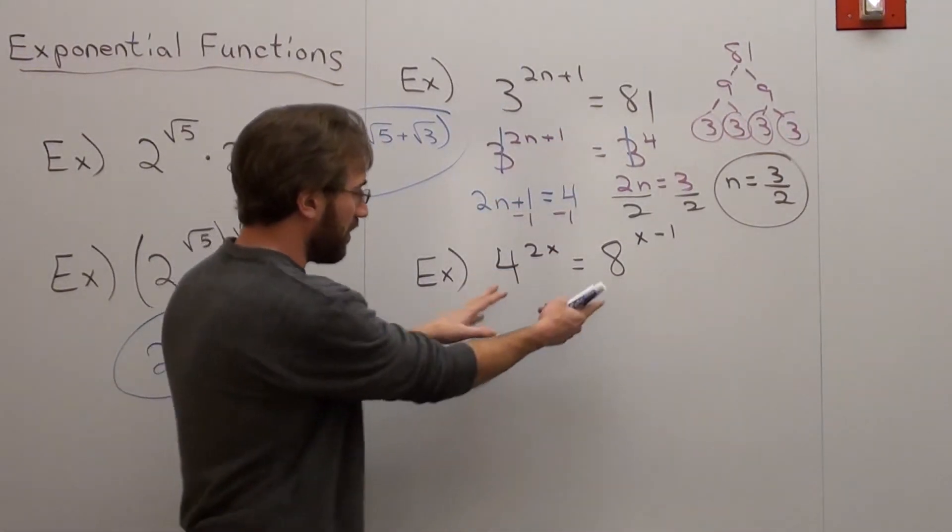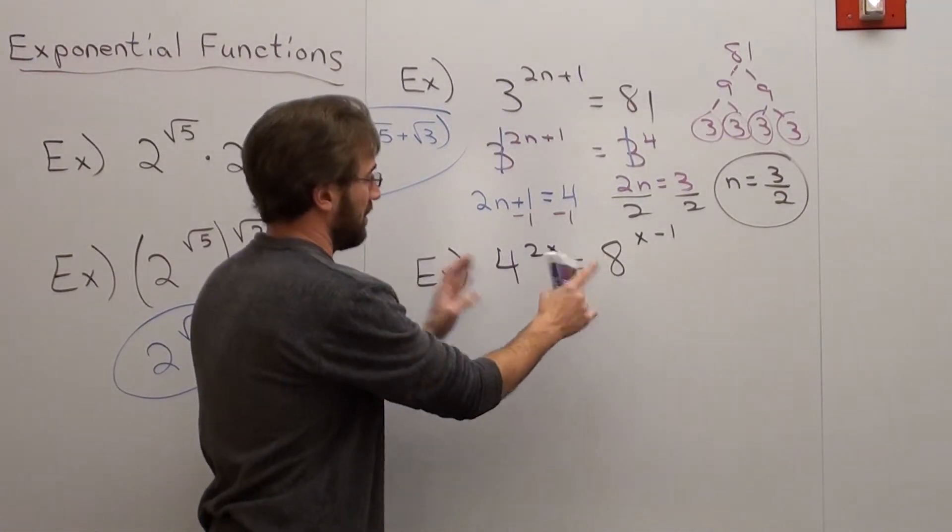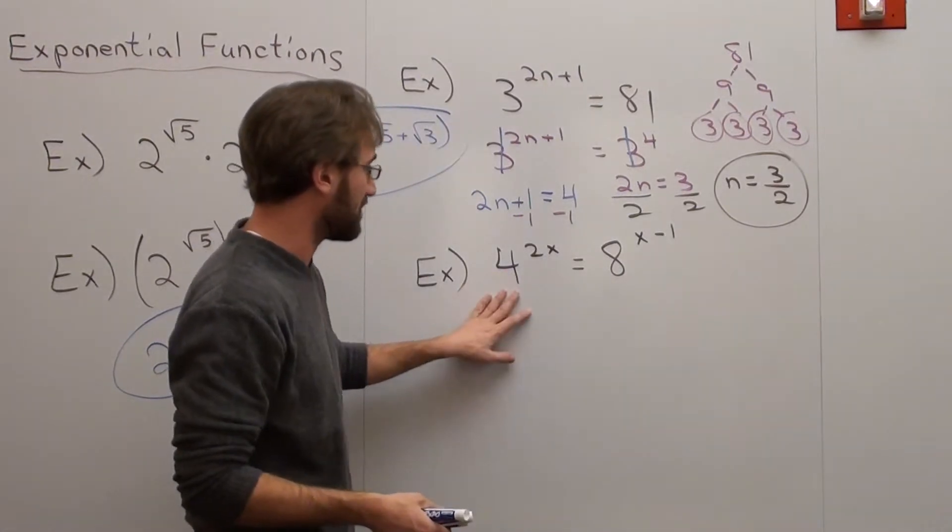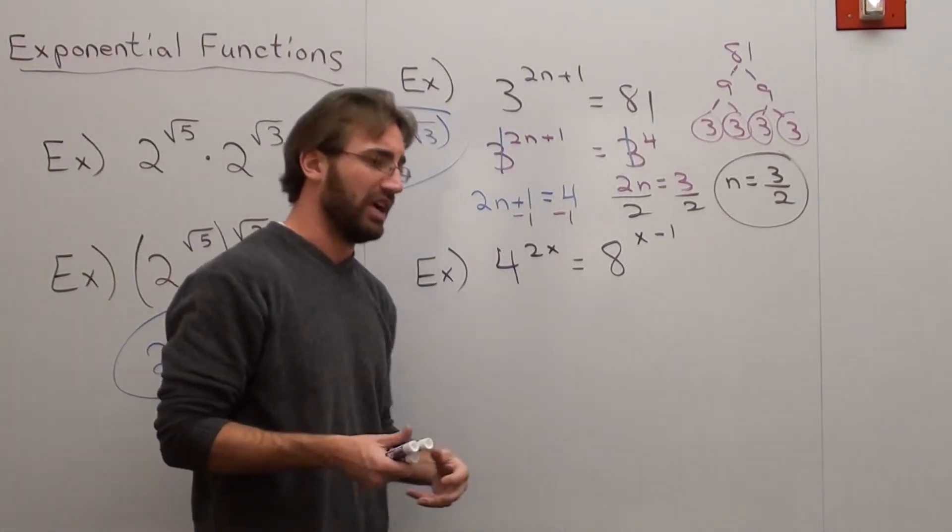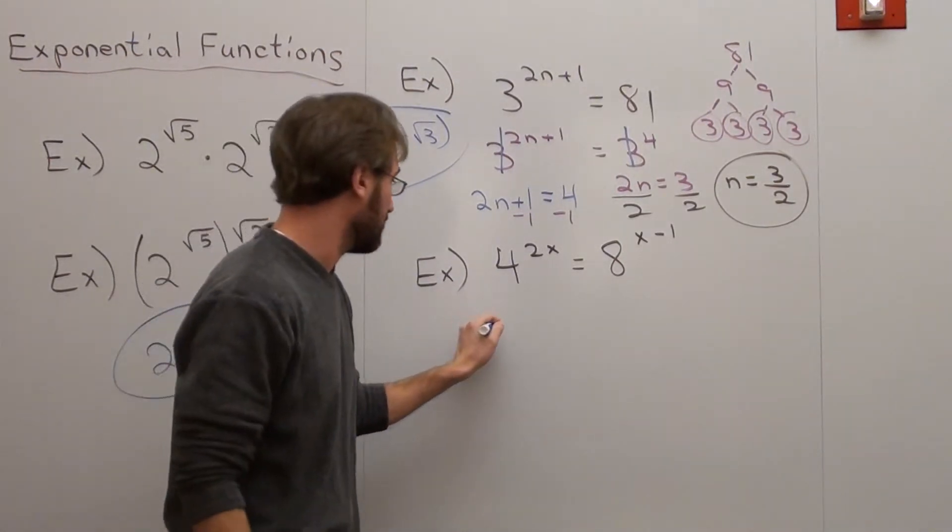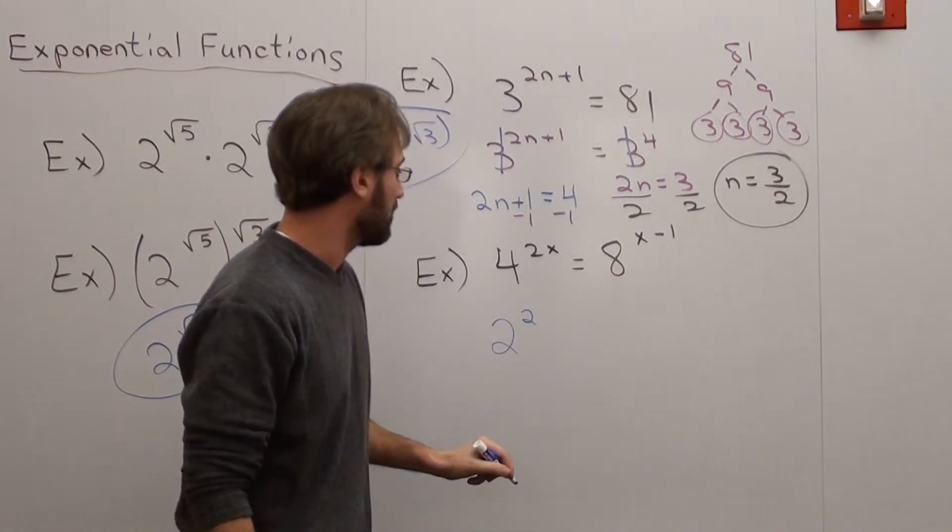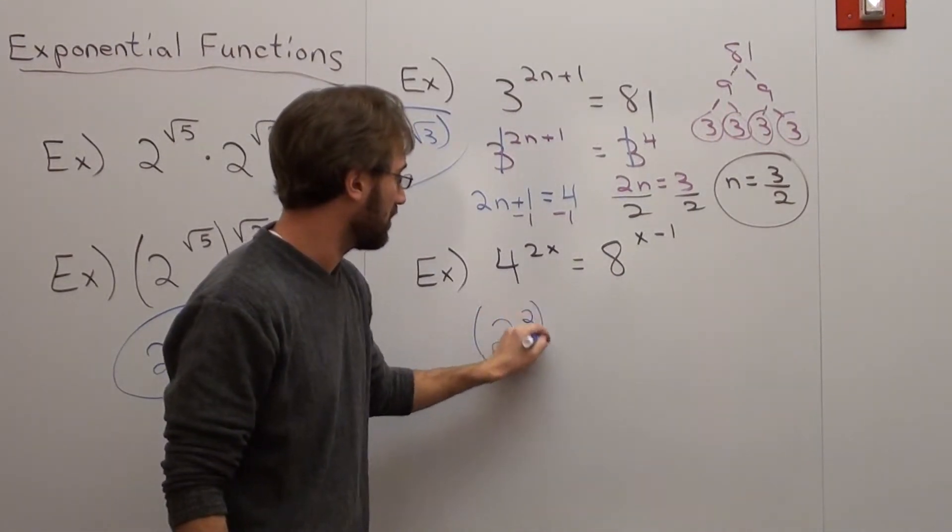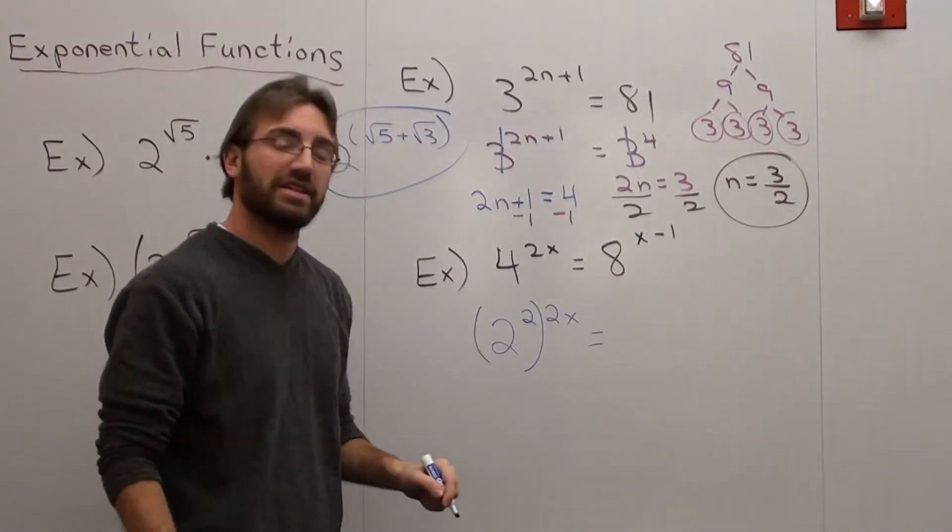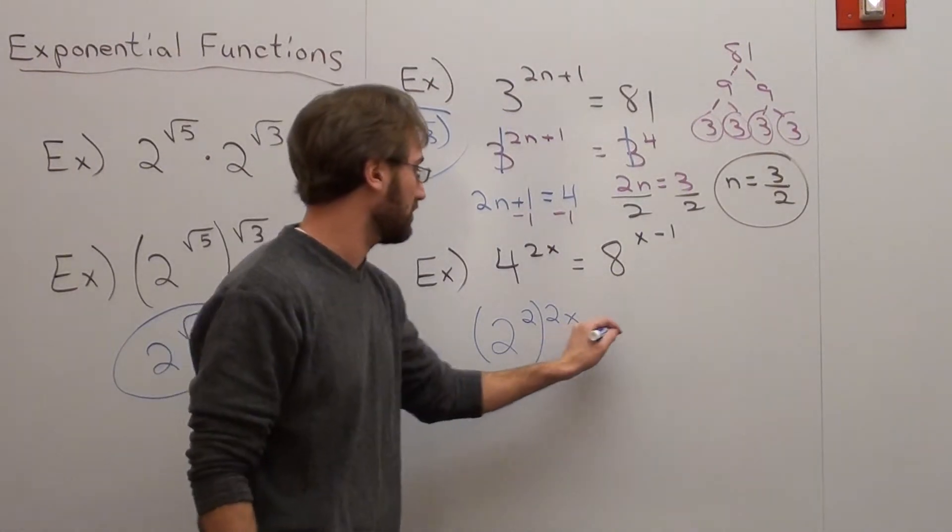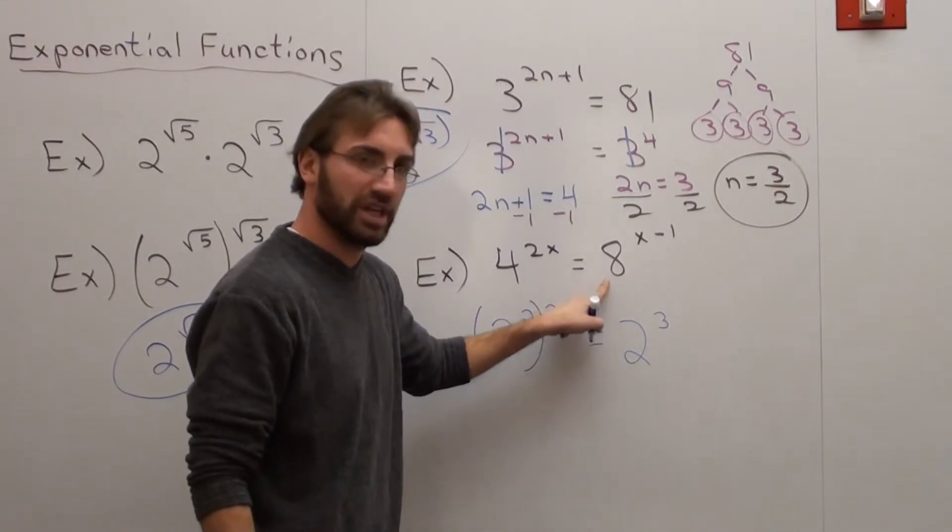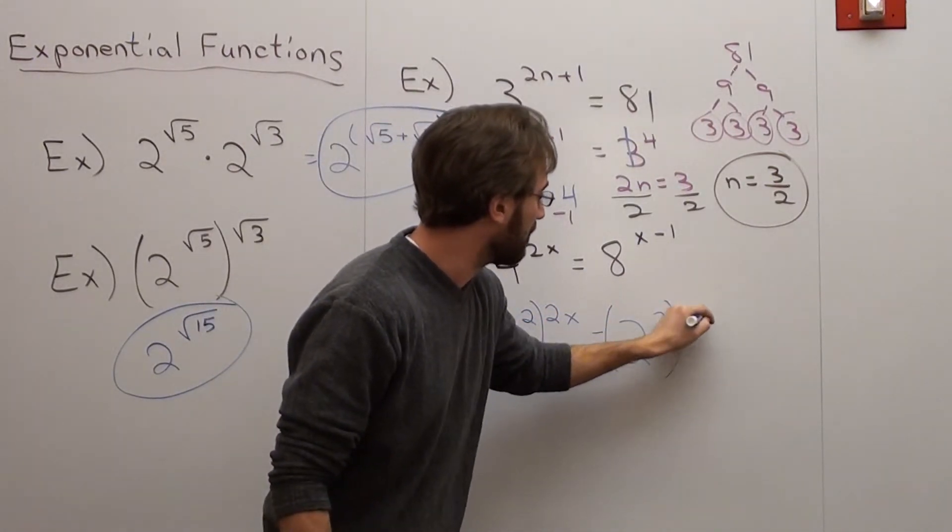And we have another one where we have two bases and neither of them are simplified, but what you want to do is you want to simplify them. This is a base of 4, this is a base of 8. And they can be both simplified as a base of 2. 4 is the same thing as 2 to the 2nd. And it's all to the 2x. 8 is the same thing as 2 to the 3rd. 2 times 2 is 4. 2 times 2 times 2 is 8. And it's to the x minus 1.